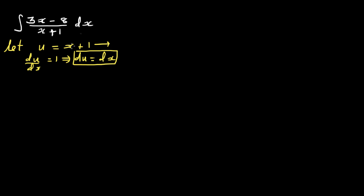Looking at 3x, I want to convert x to 3x, so I multiply both sides by 3: 3u equals 3x plus 3. Now I want 3x minus 8, so I take away 11 from both sides. So 3u minus 11 equals 3x minus 8.